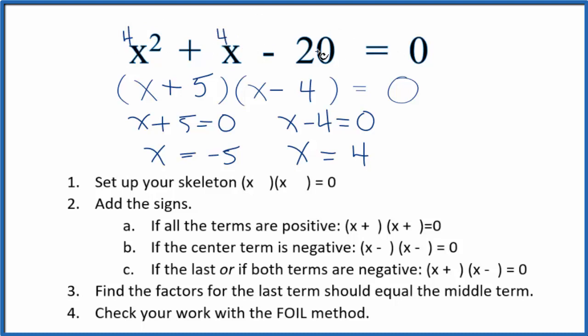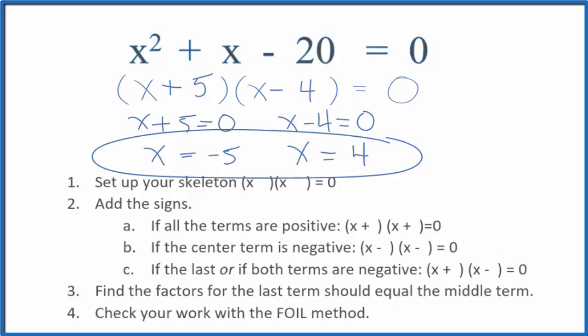So these are the solutions for this equation. This is Dr. B factoring the equation x² + x - 20 = 0. Thanks for watching.